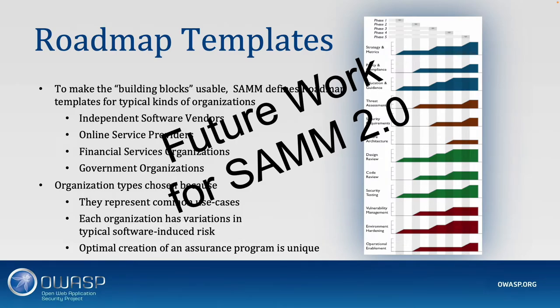Something still missing from SAMe 2.0 is roadmap templates. In the last version, there were sample templates: if you're a product firm, you should probably focus on these activities first; if you're a bank, focus more on governance. You can still access the old roadmaps, but version 2.0 has none yet — you have to figure them out yourself. This is future work to be added based on the benchmarking project, which is currently work in progress.